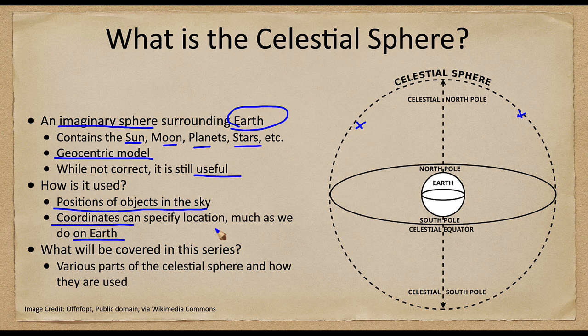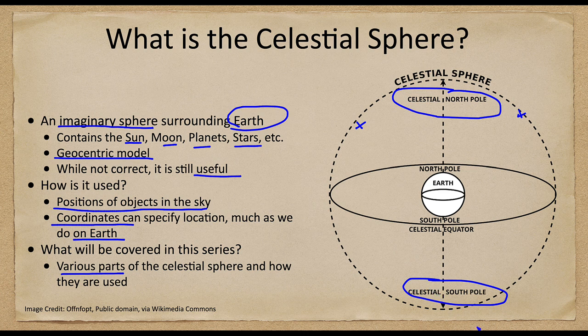So what am I going to talk about in this series? I'm going to look at various different parts of the celestial sphere. Some of those are labeled here and we will talk about those in coming discussions. We have the north and south celestial poles, for example, and we'll see later that those are actually the projection of the Earth's poles out onto the celestial sphere. We will also see the celestial equator pictured here, which is the projection of the Earth's equator out onto the sky. Those allow us to map the sky just the way we map Earth, measuring things relative to the equator and the poles.